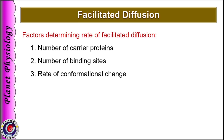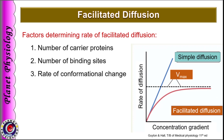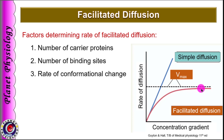Concentration gradient also affects the rate of facilitated diffusion, but only until saturation of the carrier protein. As shown in the diagram, the red curve shows the relationship between concentration gradient and rate of facilitated diffusion. Initially, as concentration gradient increases, rate of facilitated diffusion also increases. But after a certain point, rate achieves a maximum value called Vmax. Once all carrier proteins are saturated, there is no further increase in rate of diffusion in spite of increasing concentration gradient — this is Vmax.